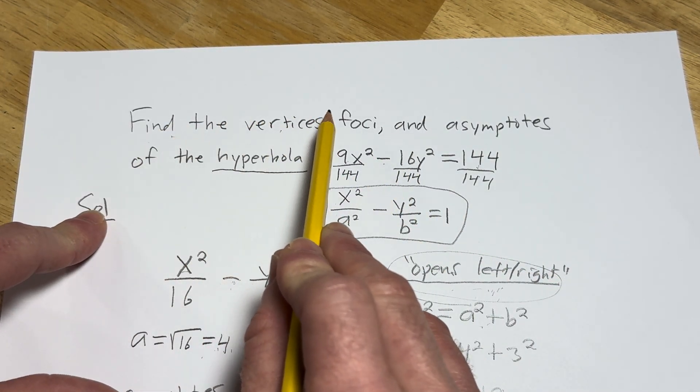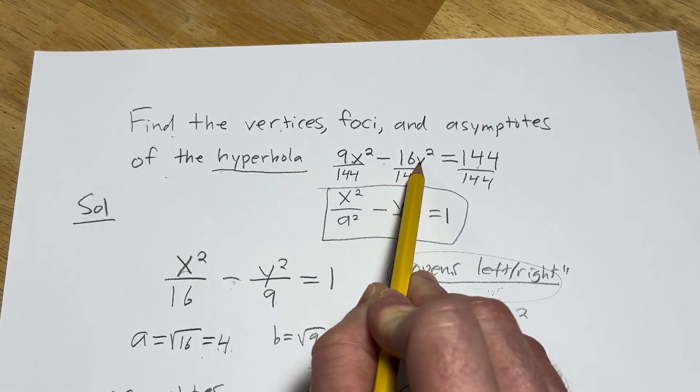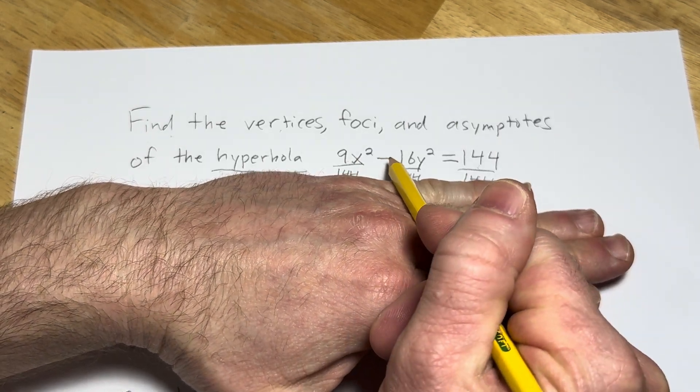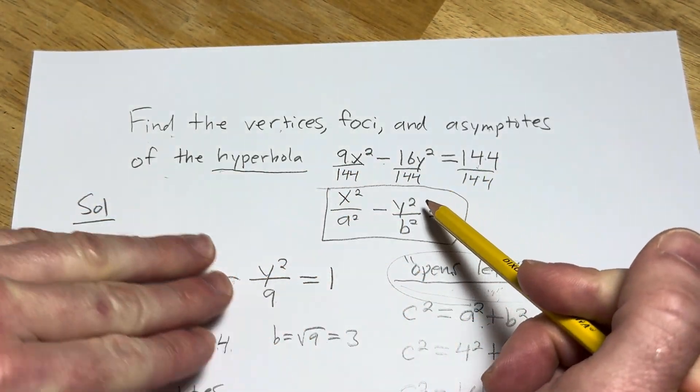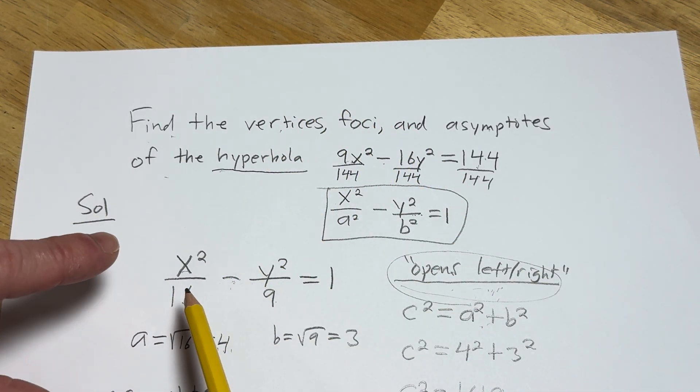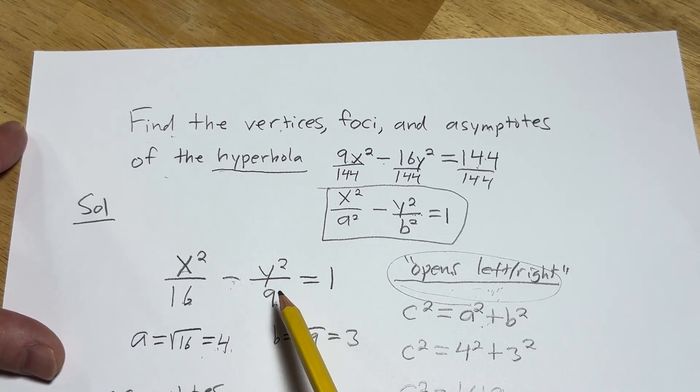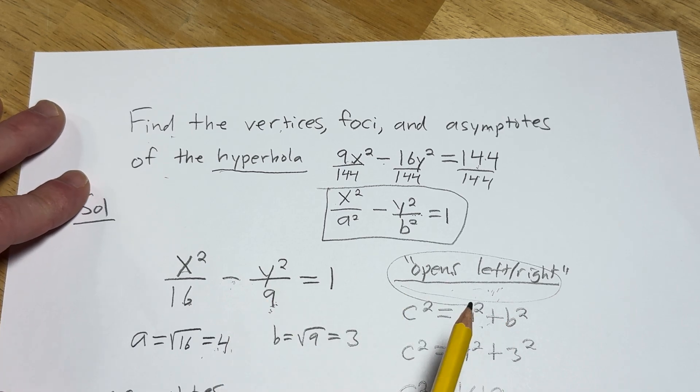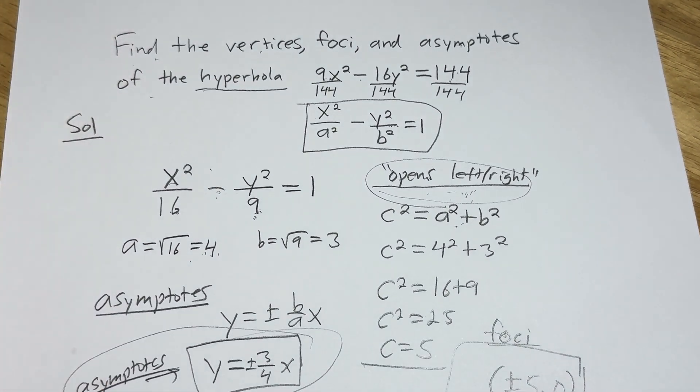So find the vertices, foci and asymptotes of this hyperbola here: 9x squared minus 16y squared equals 144. First thing is first, you realize it's a hyperbola because there's a minus here and these numbers are different. You've got to make this a 1 to make it match this formula. In a hyperbola, a is always going to be the square root of whatever number is here and b is always going to be the square root of whatever number is here. So we have our a and b. The x comes first, so it opens left and right.